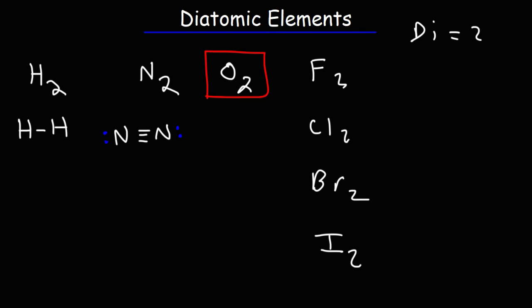Oxygen is in group 6A of the periodic table and so it has six valence electrons. It needs two more electrons to get to eight. So oxygen likes to form two bonds. And this is the chemical structure of O2. Each oxygen atom has two bonds and two lone pairs.